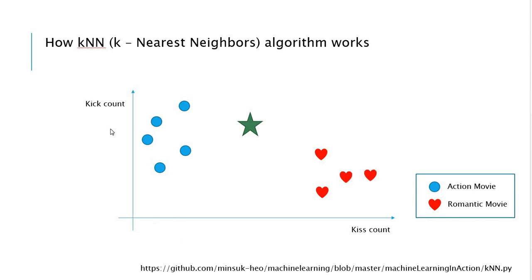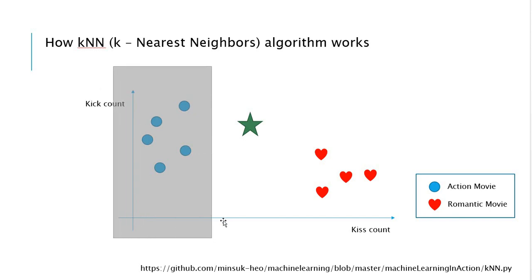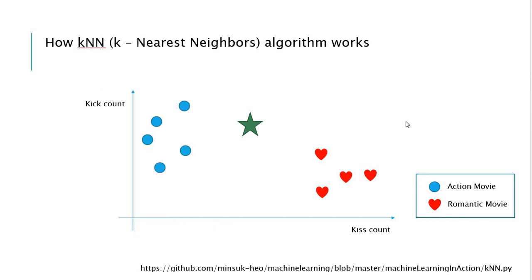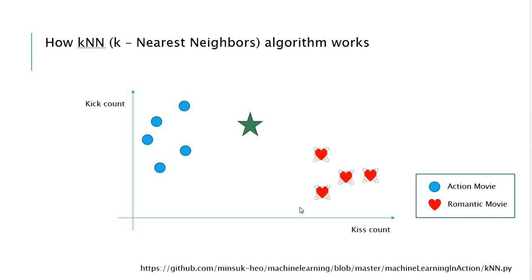As you can see, if there are more kick counts it's close to being an action movie, and if there are more kiss counts, those red hearts are close to the romantic movie. It's very hard to say if this green star is an action movie or romantic movie because it's kind of in between, and there is no specific way to say in reality.